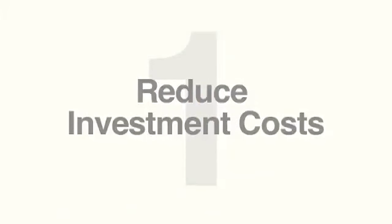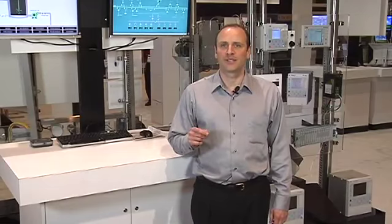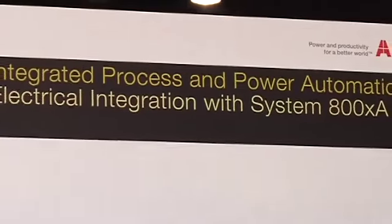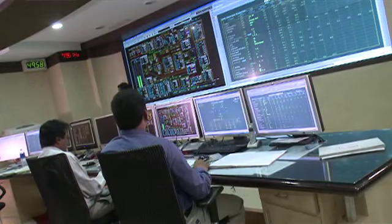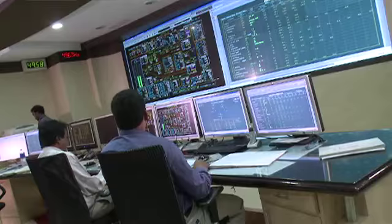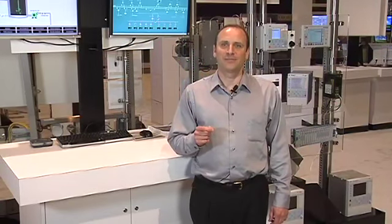The first benefit is reducing your investment costs. You can reduce your system footprint size with one integrated system. No longer will you have to have two separate workplaces for your process system and your power automation system. You can also significantly reduce your wiring using industrial Ethernet standards such as IEC 61850 and PROFINET.